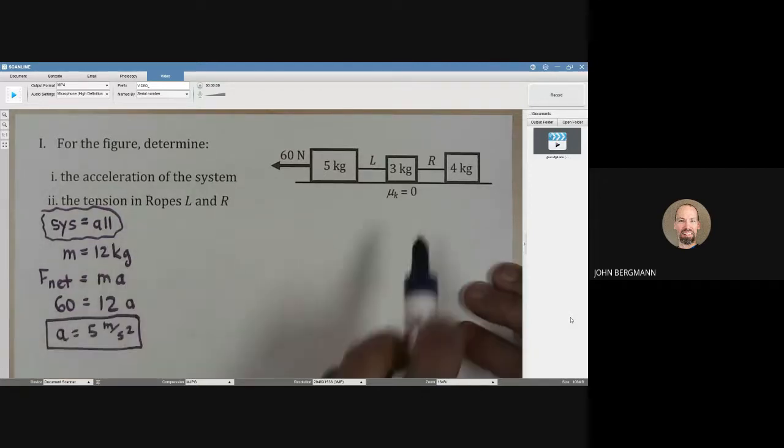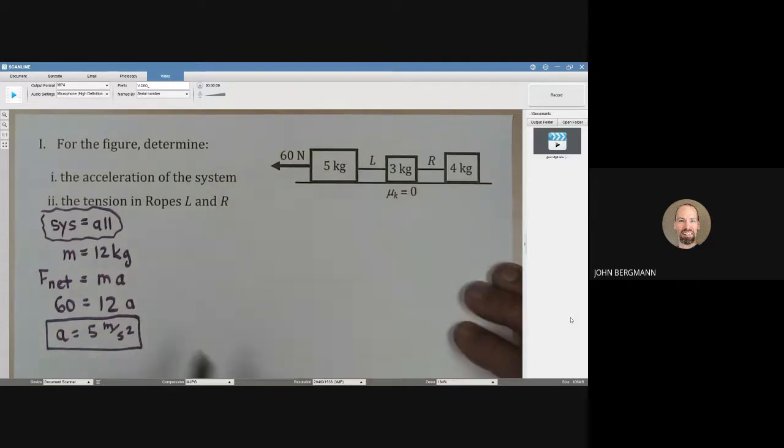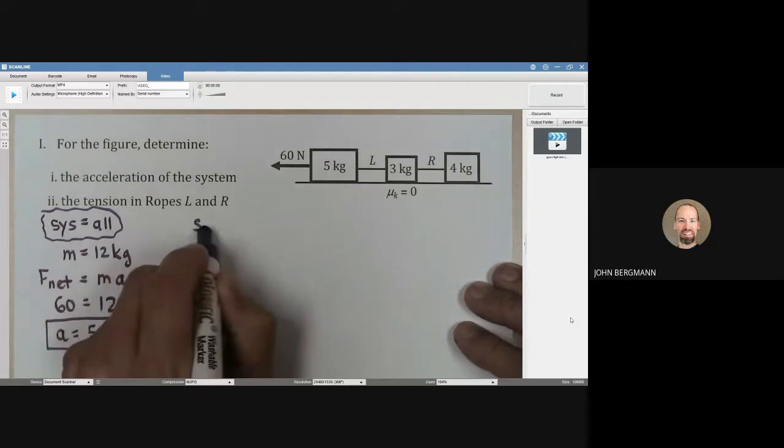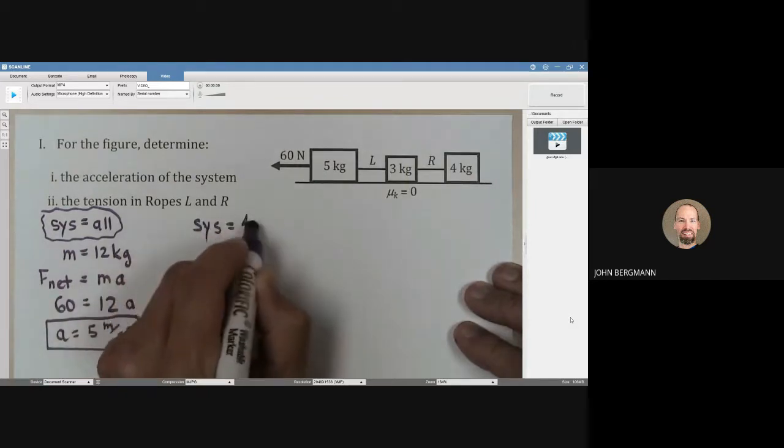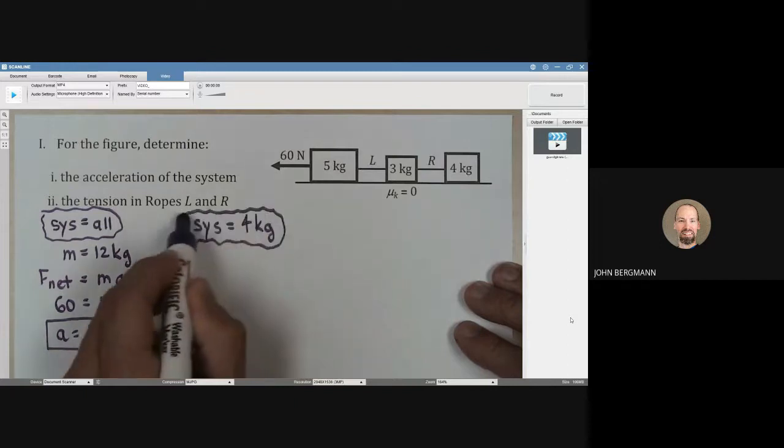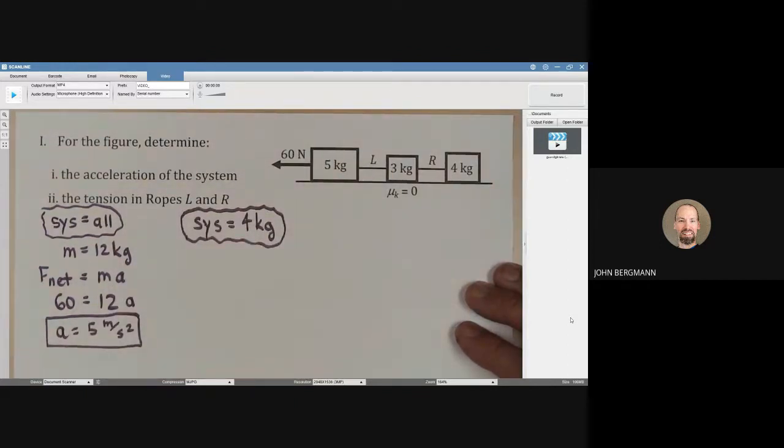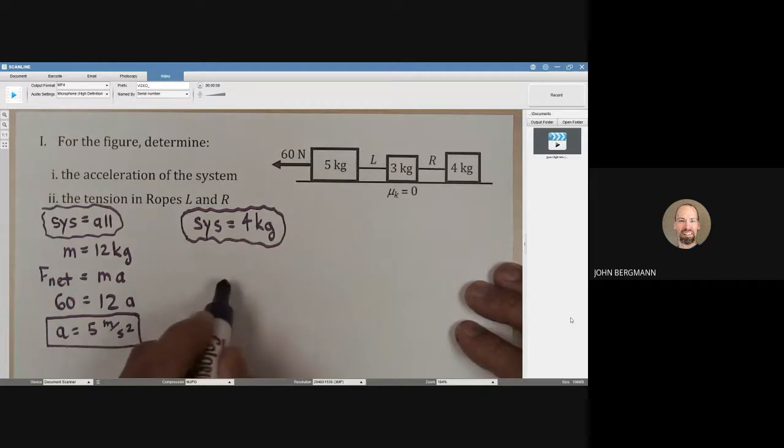Now we need the tensions in these ropes here. And to do that, let's say that the system is just the 4 kilogram mass. So, like I said, whenever you're doing a multi-body problem, you choose what the system is in order to get the job done. If we do that, what would a free-body diagram look like on that 4 kilogram mass?